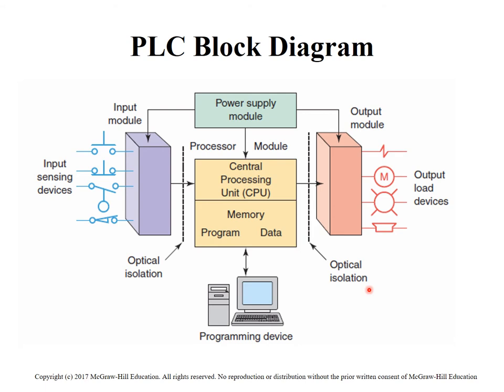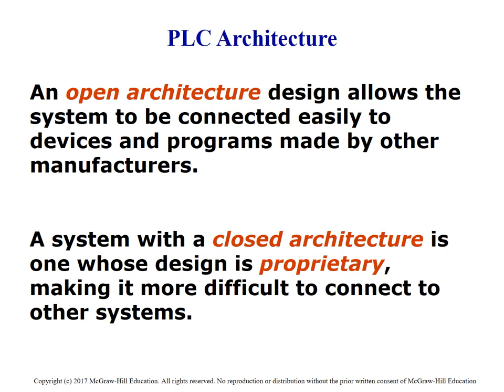The first device we looked at was fixed IO—all in one neat package that you can't separate. In the modular style, you can separate each device. This is what they consider an open architecture design: they give you the hardware and you're allowed to design the program to operate any way you see fit. A closed architecture means you can't customize the system the way you want. Open architecture is like a modular system you can adjust and tweak, adding inputs and outputs. Closed architecture is more like the fixed IO brick—processor, inputs, and outputs all in one piece.